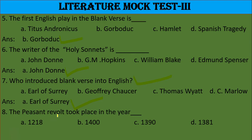Question 8: The Peasants' Revolt took place in the year — 1218, 1400, 1390, or 1381? The right answer is 1381.